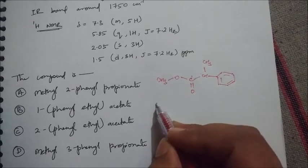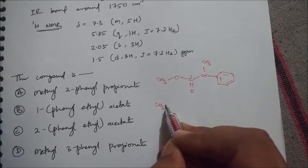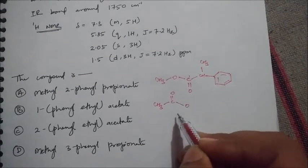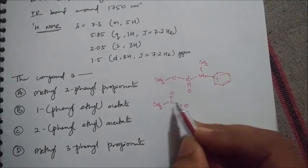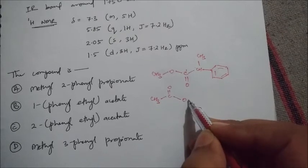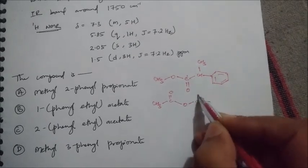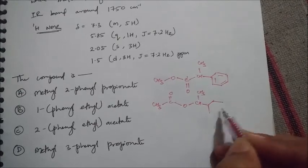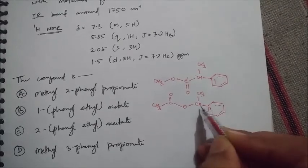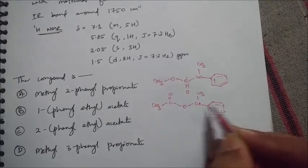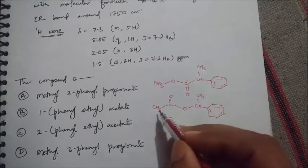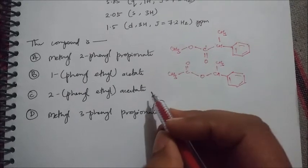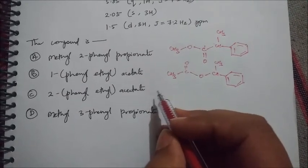For option B, 1-phenylethyl acetate: this is the acetate group, this is the ethyl part, and phenyl is on the first carbon. So on the first carbon it is phenyl, and it carries the acetate group — that is 1-phenylethyl acetate.